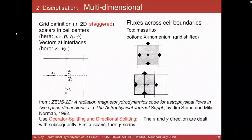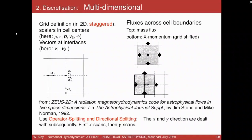This approach was put forward in the Zeus code, now nearly 30 years old, developed by Jim Stone and Mike Norman — a general-purpose hydrodynamic code with 2D hydro, 3D hydro, radiative transport, and magnetohydrodynamics. It's still used and available as Zeus 3D. In multi-dimensional problems, you go into one-dimensional directions one at a time: x-direction, then y-direction, then z-direction — looking at the flow of material across the boundaries of the grid cells, adding up all fluxes from different boundaries.